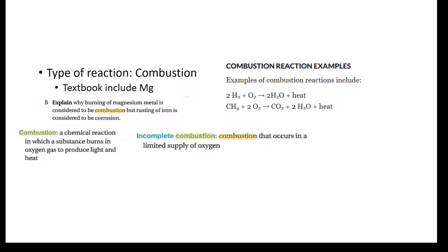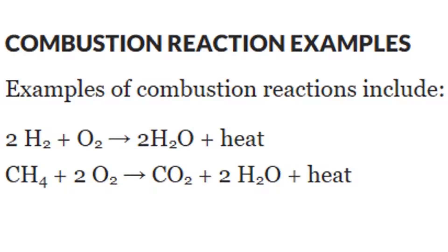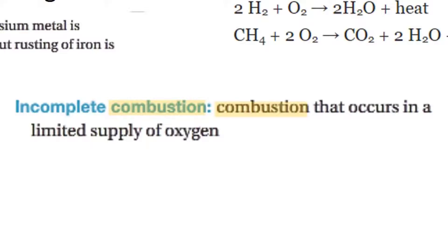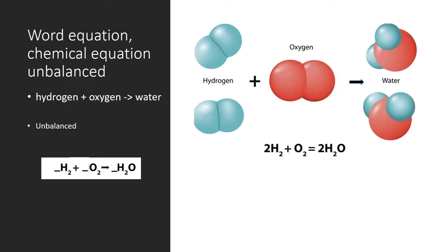However, you'll find in the textbook this is also a form of combustion reaction — a chemical reaction in which a substance burns in oxygen gas to produce light and heat. Hydrogen is included as a type of combustion reaction, as is magnesium or any metal that burns in oxygen. They also make a point that incomplete combustion is when there's not enough oxygen and the hydrogen, magnesium, or in this case methane, is left behind.